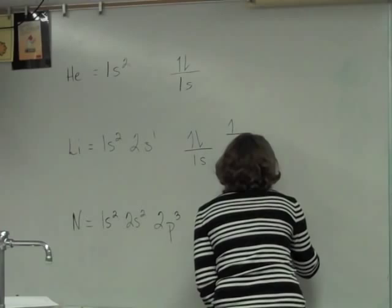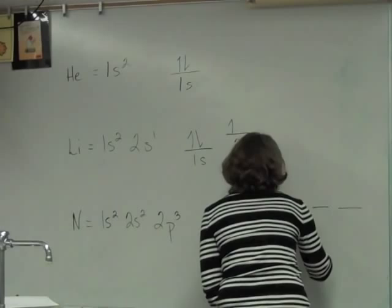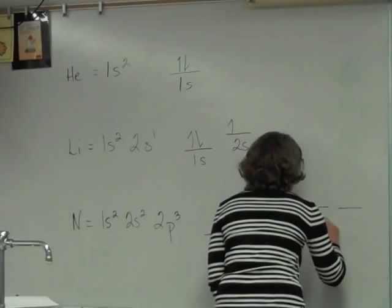We say that this is the 2p sub x, the 2p sub y, and the 2p sub z. One, two, three p orbitals.